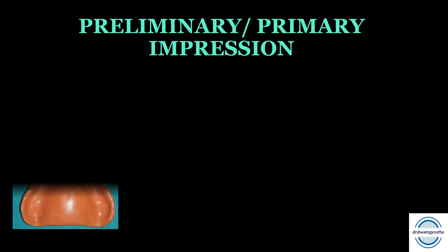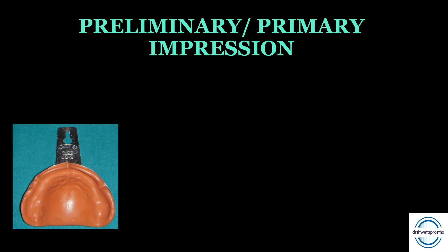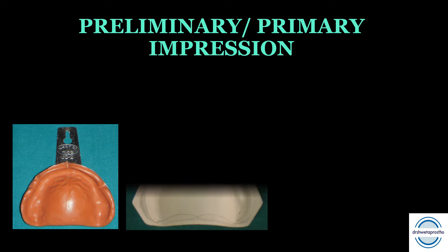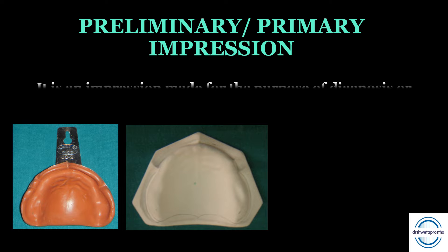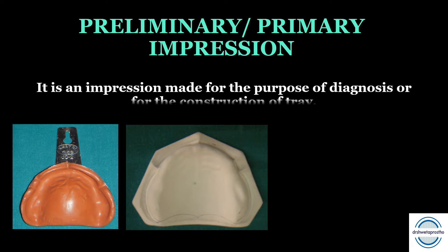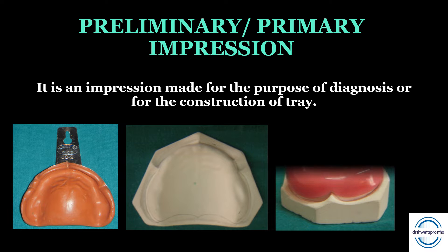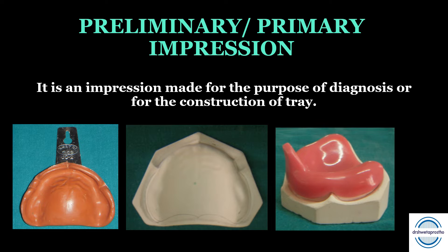What is a preliminary or a primary impression? First, what is a dental impression? It is the negative imprint of the hard and the soft tissues present in the mouth from which a positive reproduction can be formed. The preliminary or primary impression in complete denture is the impression made for the purpose of diagnosis — to see what is present in the mouth — or for the construction of the special tray for making the final impression.